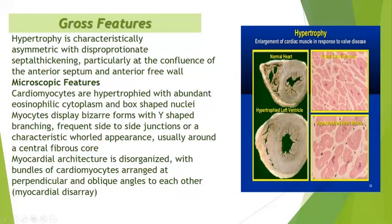The gross features: hypertrophy is characteristically asymmetrical with disproportionate septal thickening, particularly at the confluence of the anterior septum and the anterior wall. As you can see in the diagram, there is hypertrophy — enlargement of the cardiac muscle in response to valve disease. This is the normal heart and this is the hypertrophied left ventricle. Microscopically, the cardiomyocytes are hypertrophied with abundant eosinophilic cytoplasm and box-shaped nuclei. Myocytes display bizarre forms with Y-shaped branching and frequent side-to-side junctions. Myocardial architecture is disorganized with bundles of cardiomyocytes arranged at perpendicular and oblique angles to each other, called myocardial disarray.